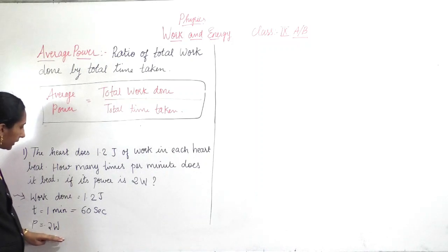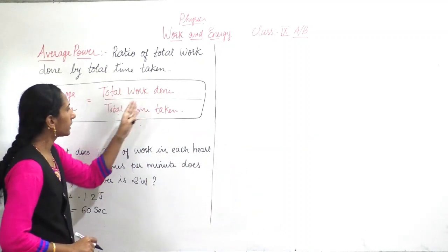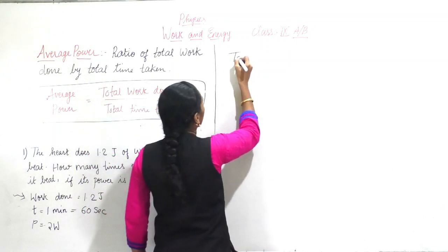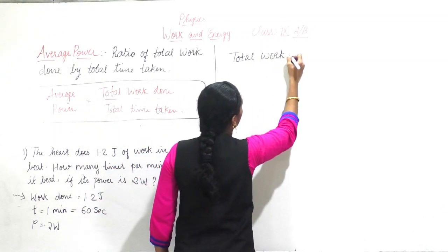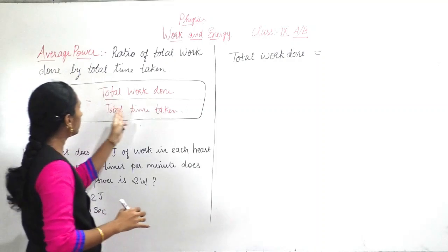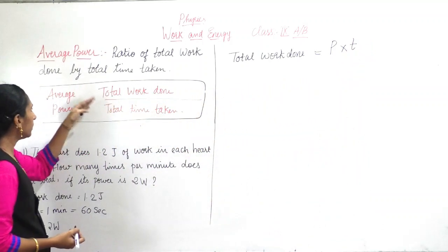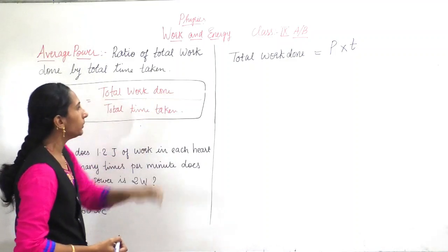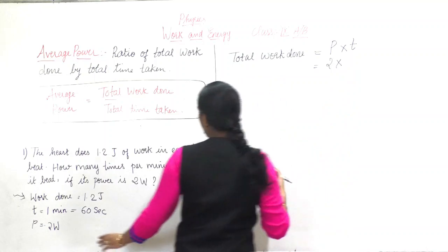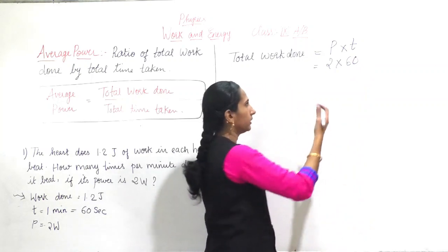First, before going further, you will find the total work done by the heart. The formula is: average power equals total work done divided by total time. So rearranging, total work done equals power multiplied by total time taken. So total work done equals 2 into 60 seconds.